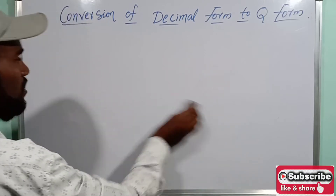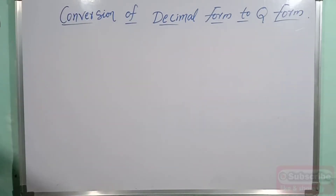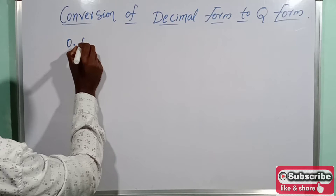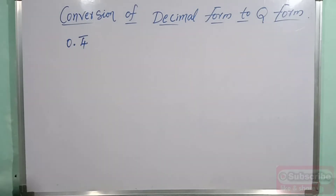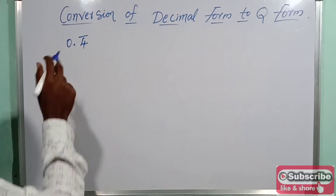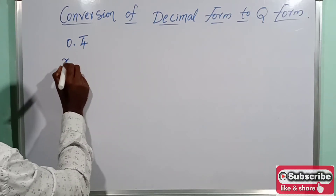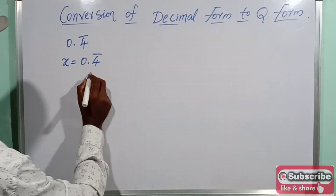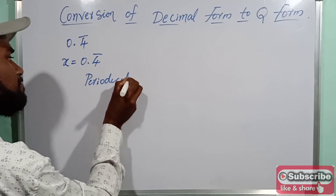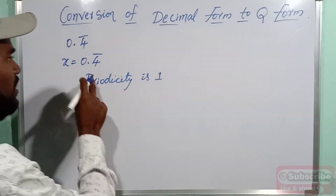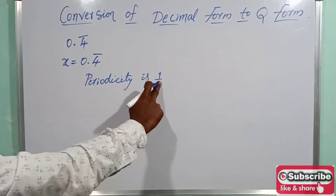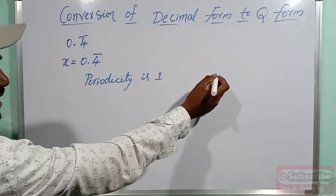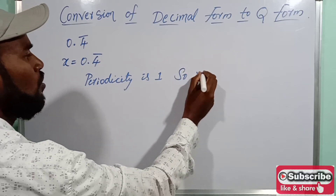Now I am going to explain non-terminating repeating decimals. For example, 0.4 bar. Let's see what we do here. Now let's consider x equals to 0.4 bar. What is the periodicity? Periodicity is 1 — the repeating decimal has length 1. If periodicity is 1, multiply by 10; if periodicity is 2, multiply by 100. Since periodicity is 1, we multiply by 10.